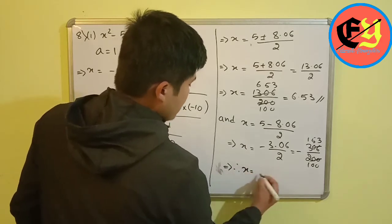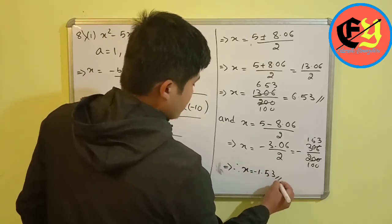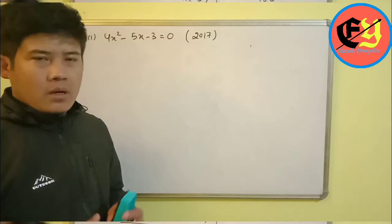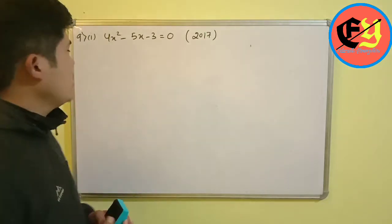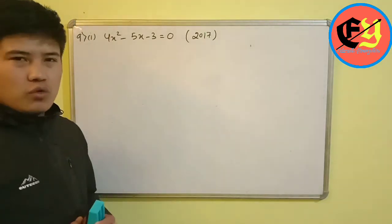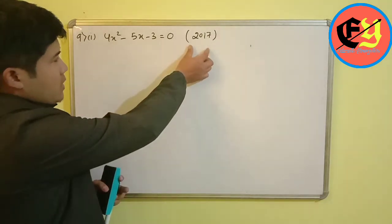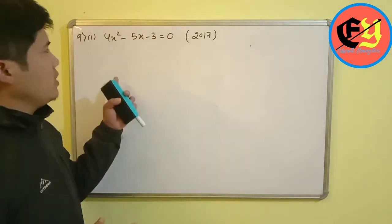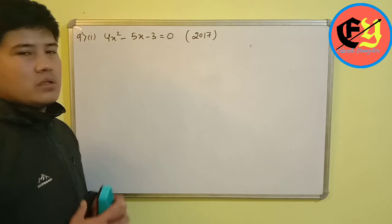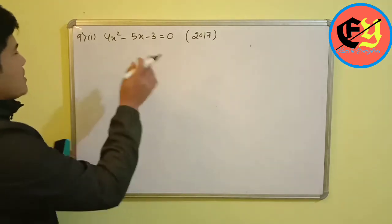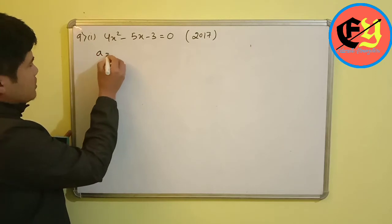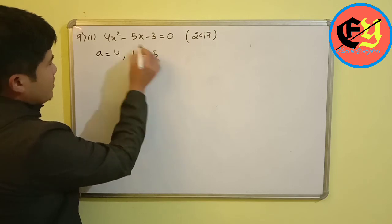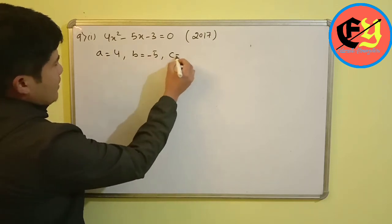Therefore x equals 6.53 or x equals minus 1.53. Now question number 9: solve for x, correct to two decimal places (Board Exam 2017). Here a equals 4, b equals minus 5, c equals minus 3.